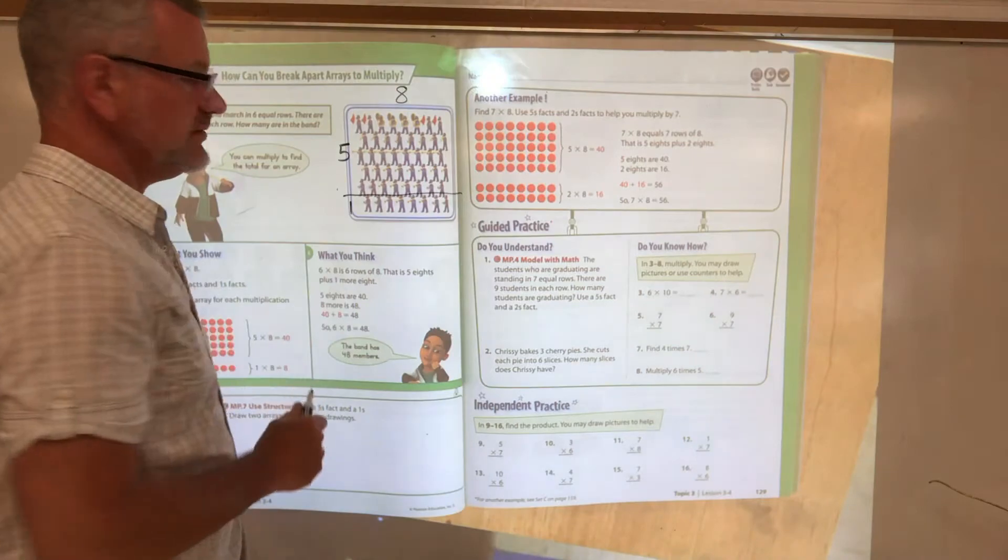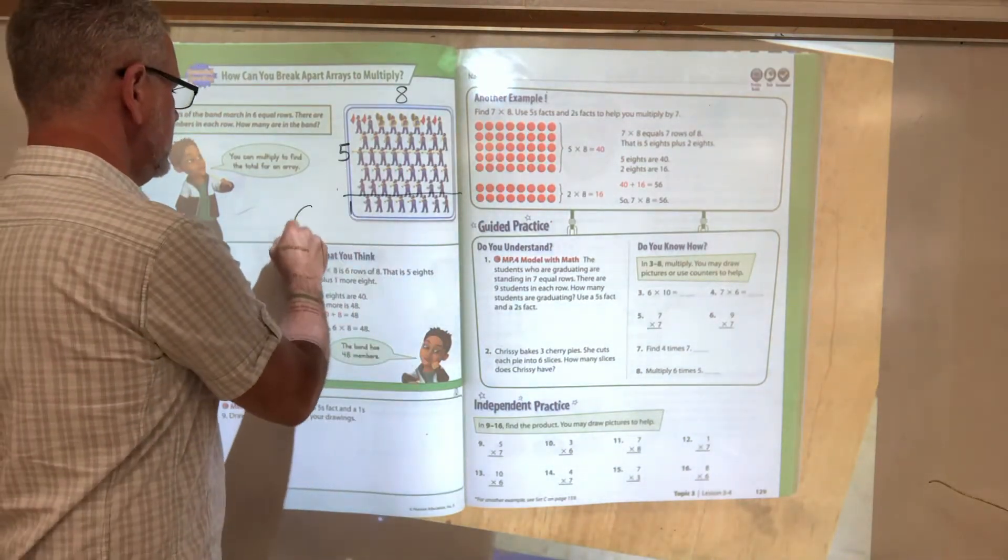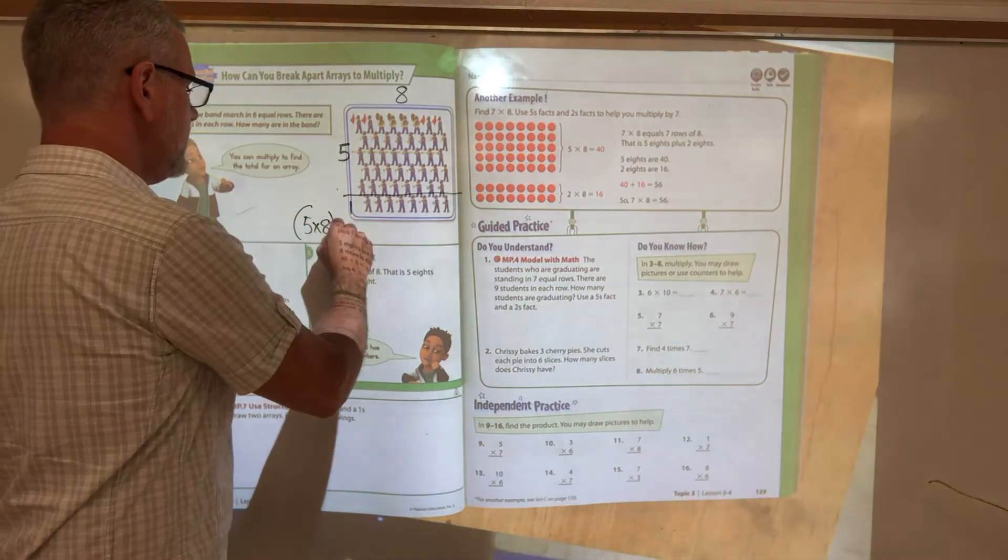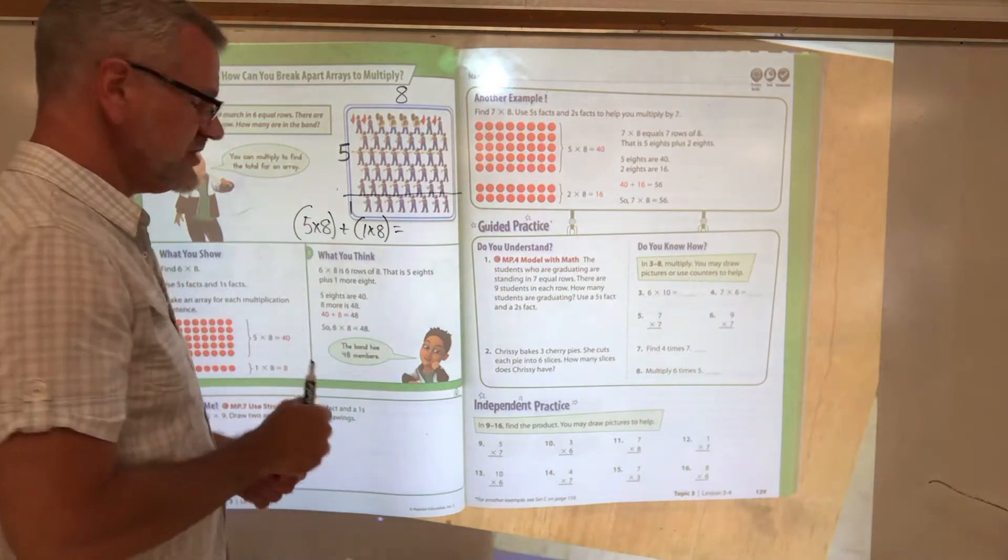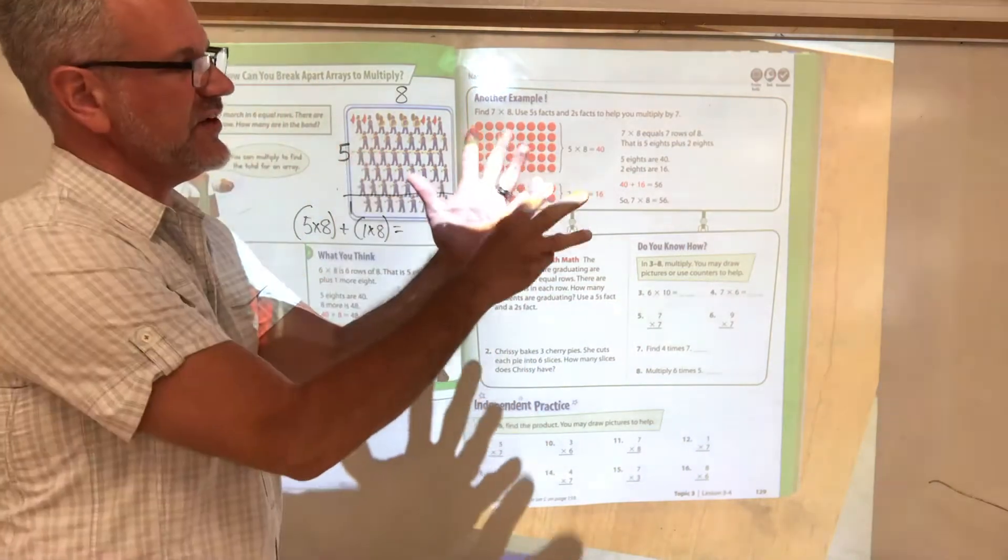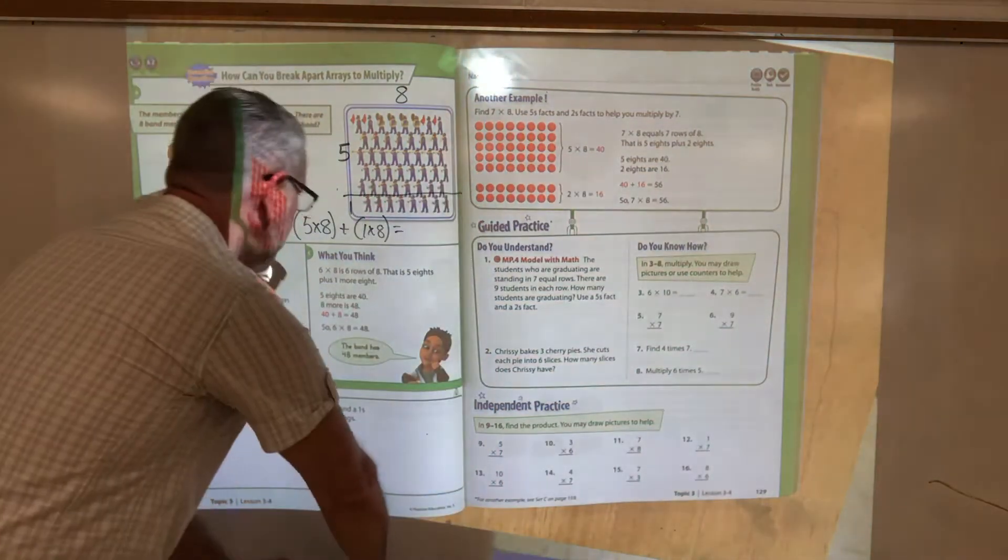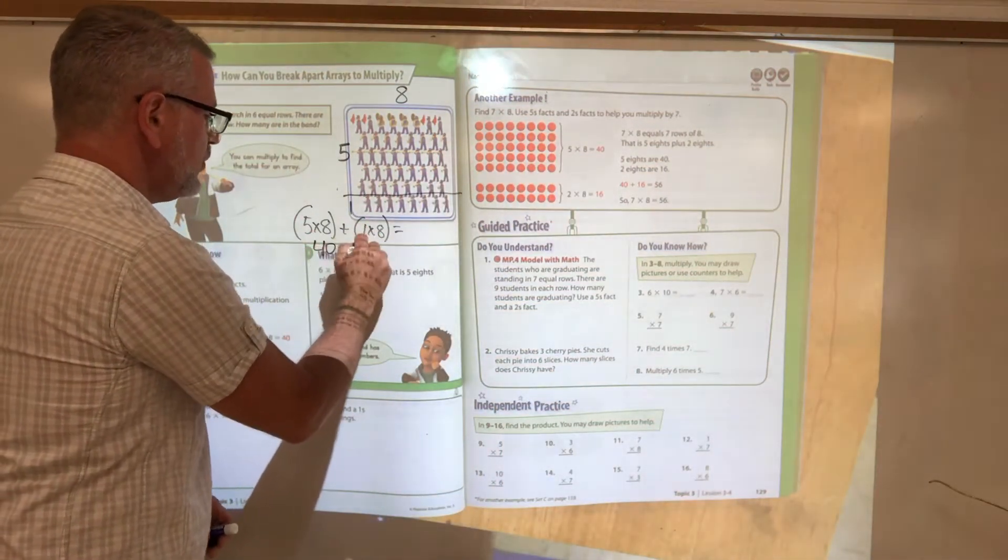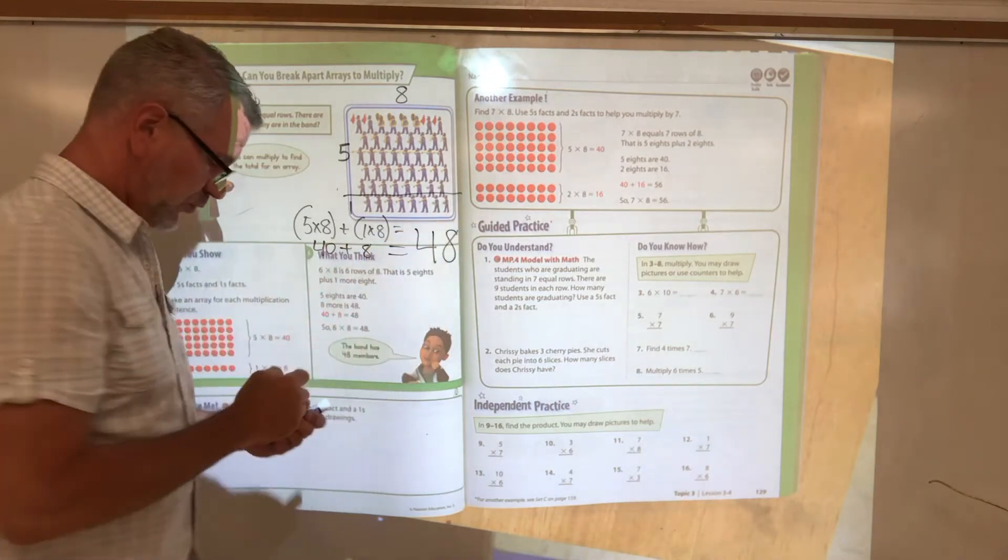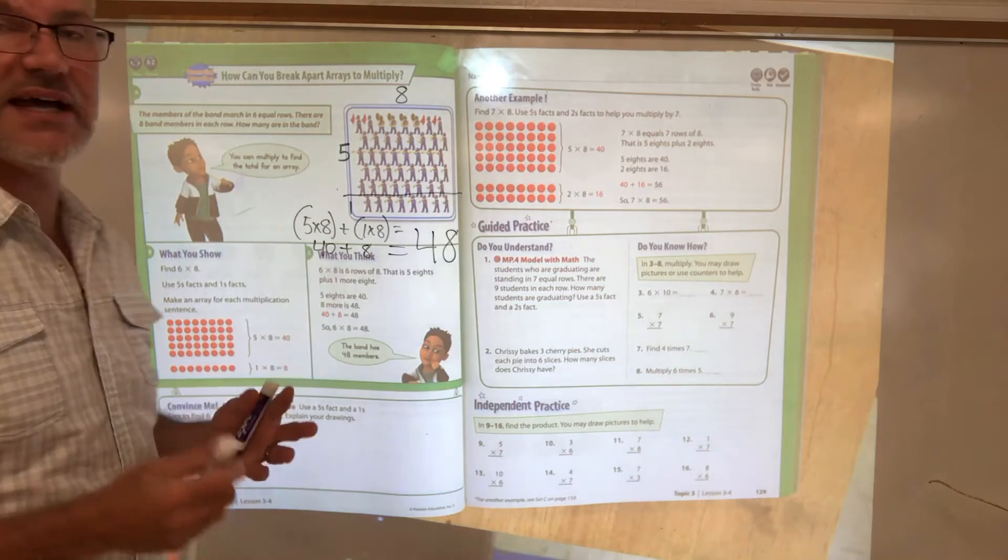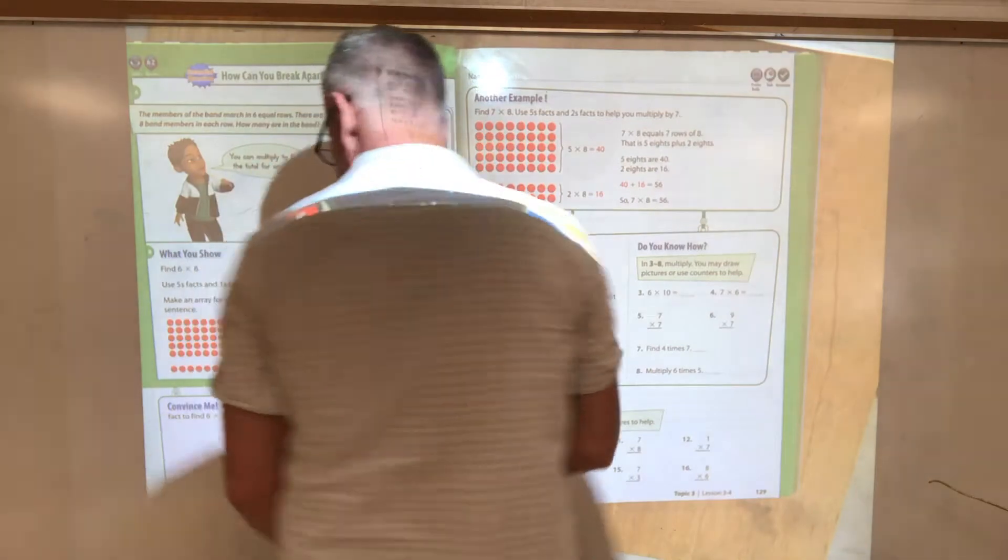So five rows of eight, which is just five times eight, which is the same as eight times five, plus one more row of eight. Five rows of eight, count by fives: five, ten, fifteen, twenty, twenty-five, thirty, thirty-five, forty. Plus one more eight would be eight, and that's going to give me forty-eight. So breaking down the big numbers into two smaller, easier numbers.